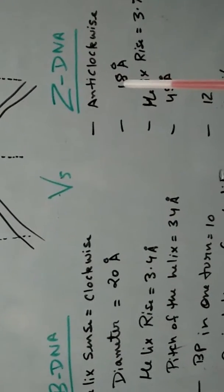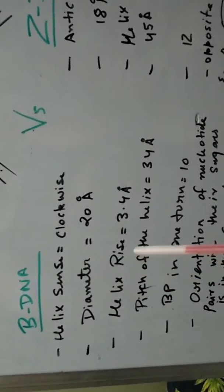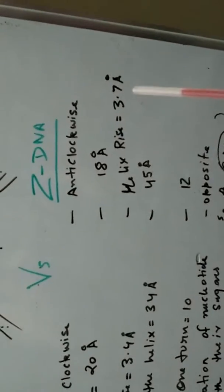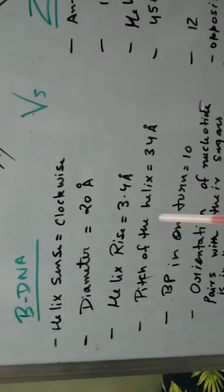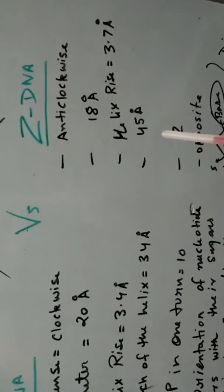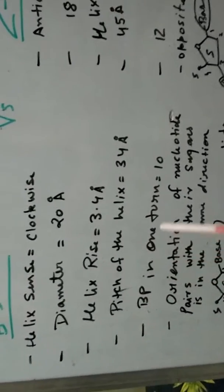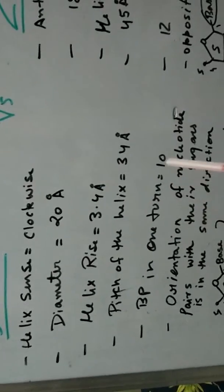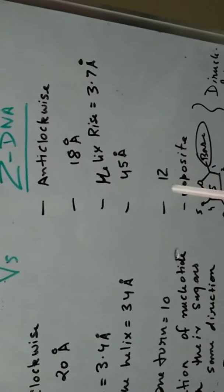Helix rise in B-DNA is 3.4 angstroms, but it is 3.7 angstroms in Z-DNA. Pitch of the helix in case of B-DNA is 34 angstroms; it is 45 angstroms in Z-DNA. Number of base pairs in one turn in case of B-DNA is 10, and number of base pairs are 12 in Z-DNA.